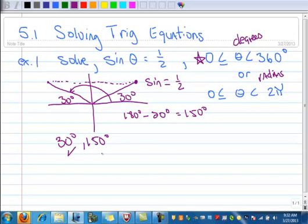Notice how I have to include both of these because it's asking me to include all the places the sine is 1 half between 0 and 360. So there's example 1.